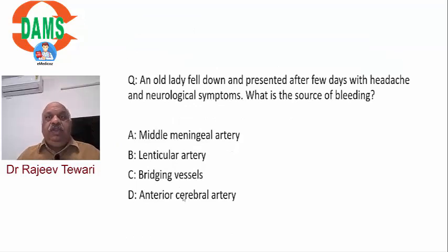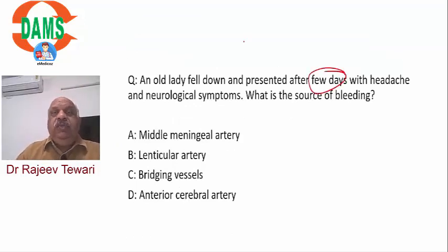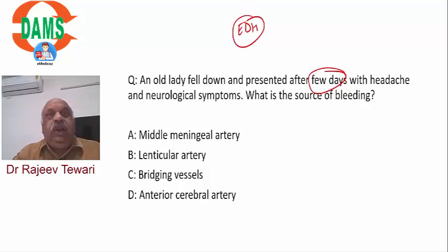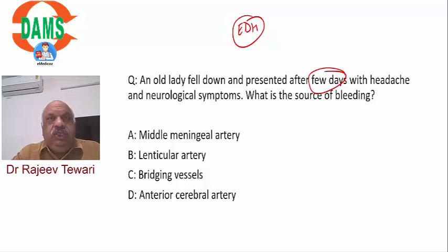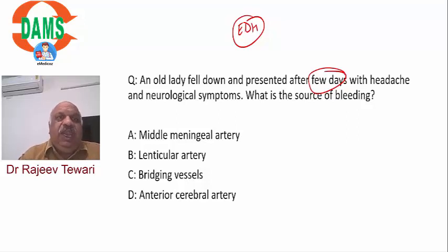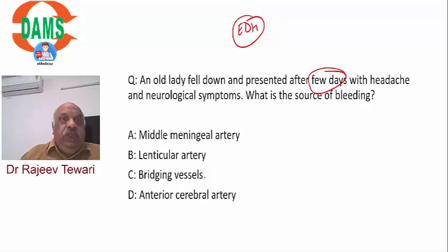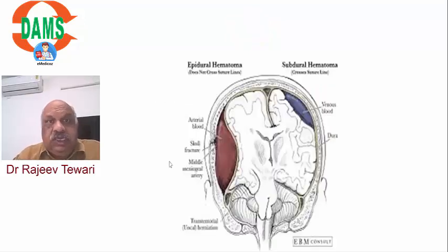An elderly patient who fell and presented after several days with headache: this is chronic subdural hematoma. Chronic extradural hematoma does not exist. Extradural hematoma is common in young age, caused by blunt trauma to the temporal area. The vessel involved is the middle meningeal artery (arterial bleed). Skull fracture is present in 95% of adults. Extradural does not cross the midline and can have a lucid interval (period of consciousness between two periods of unconsciousness).